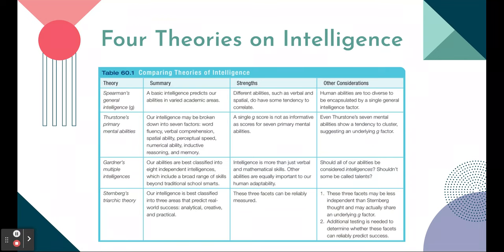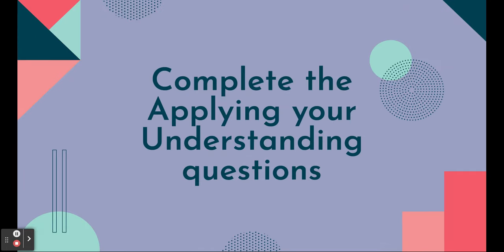Generally, these are the four theories on intelligence — just four ways of thinking about it. As with everything in psychology, this doesn't cover everything. We are so much more than one person's theory. That's why we still study this and develop new ways to measure it. That is it for module 60. Complete the applying your understanding questions, then you're done with day one. Pause the video and come back tomorrow starting where this ended.